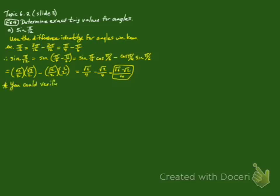Now, you could verify this by putting both the sine of pi over 12 in your calculator and root 6 minus root 2 over 4 into your calculator, and comparing the decimal form of both of those answers.